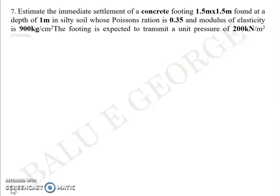In this question, you are asked to estimate the immediate settlement of a concrete footing 1.5m x 1.5m in plan, found at a depth of 1m in silty soil. Poisson's ratio is given as 0.35, modulus of elasticity is 900 kg per cm², and the footing is expected to transmit a pressure of 200 kPa.